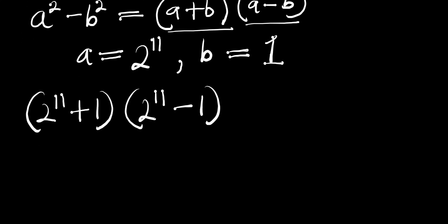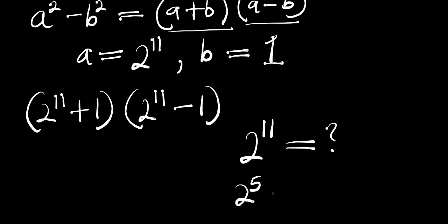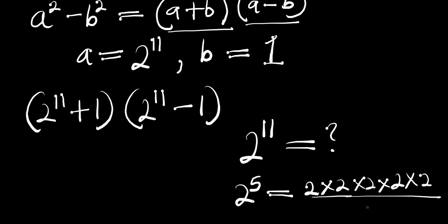The problem now is: what is the value of 2 to the power of 11? Let's start with 2 to the power of 5, which equals 2 times 2 times 2 times 2 times 2 — that is 2 multiplied in 5 places — and if you multiply this out you get 32.